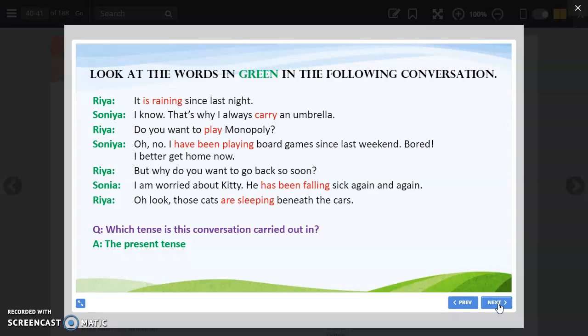Simple present tense is something which happens on a regular basis or something which is a universal truth. We call it simple present tense. Do you want to play Monopoly? Again it is simple present tense. Sonia: I have been playing. Have been is for present perfect continuous, like in have been playing. It is used to mention verbs which have happened in the past and have been continuing till now.